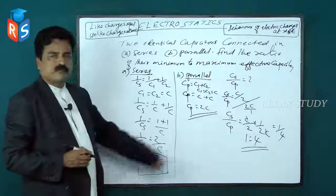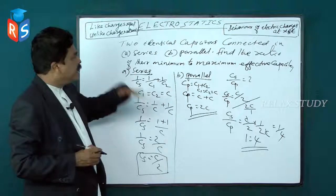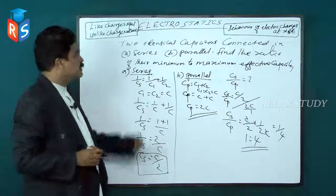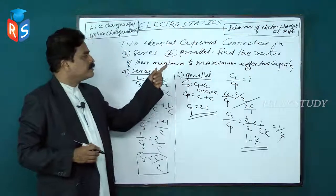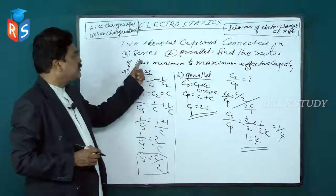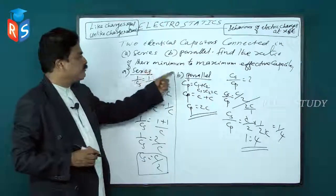If it is three identical capacitors connected in series and parallel, find the ratio of their minimum to maximum effective capacitance.